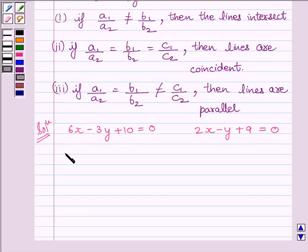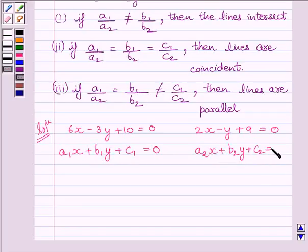These equations are of the form a₁x plus b₁y plus c₁ equals 0 and a₂x plus b₂y plus c₂ equals 0.